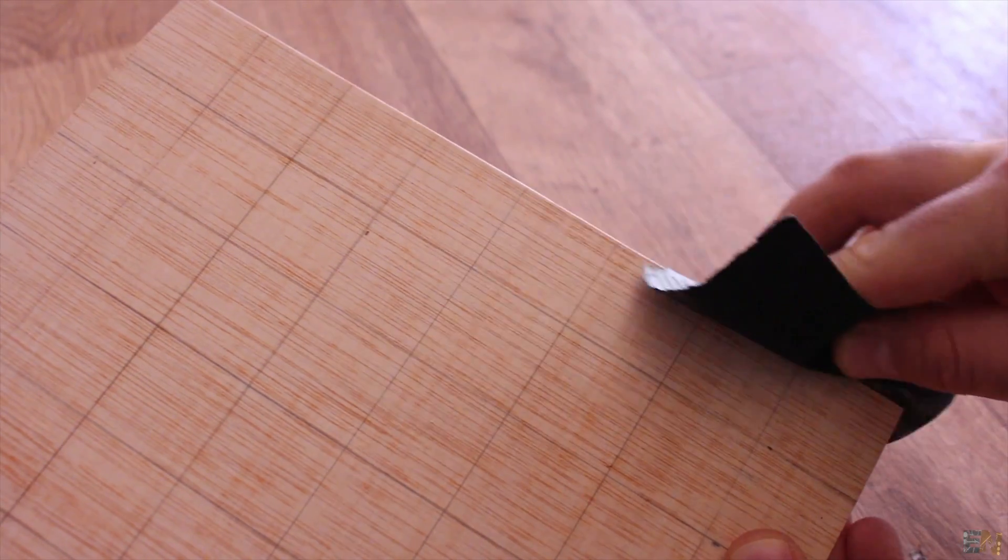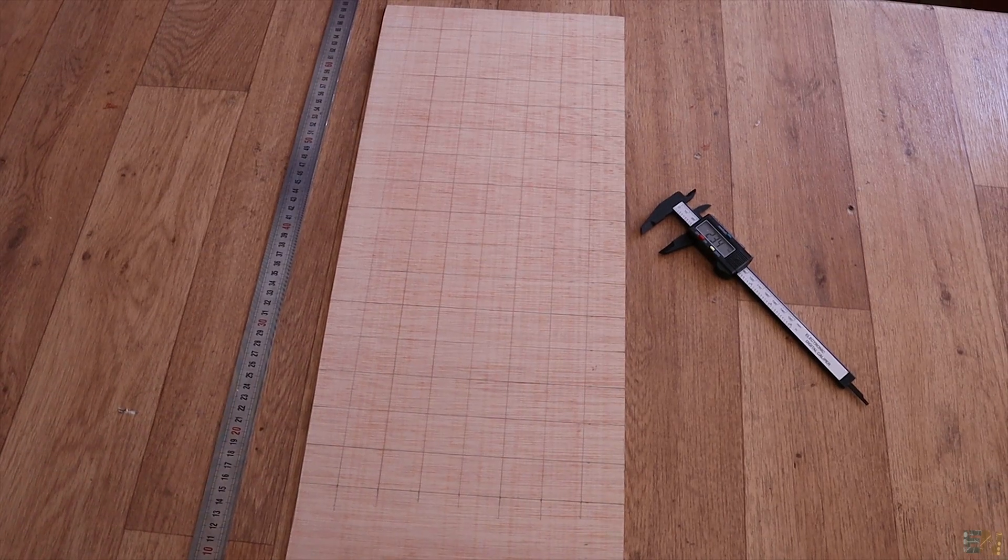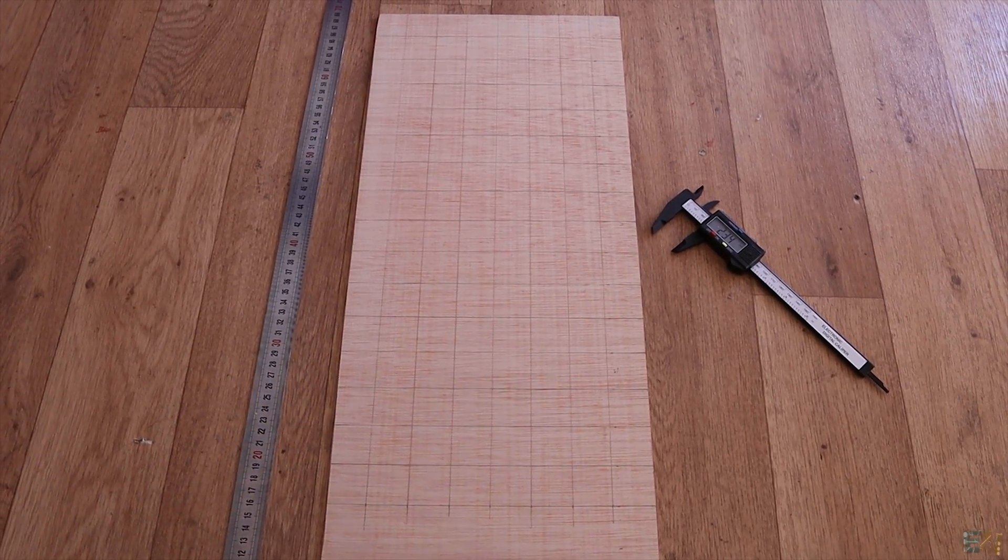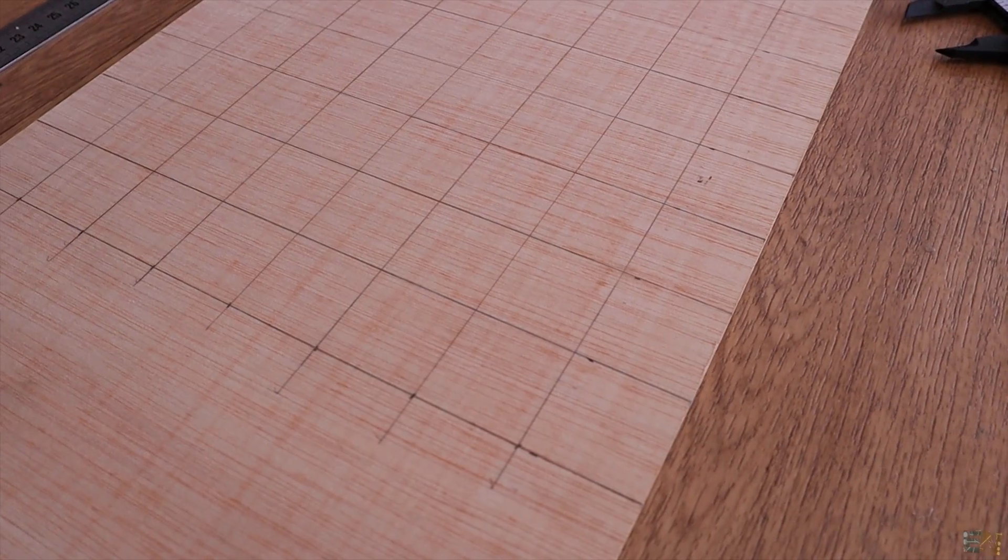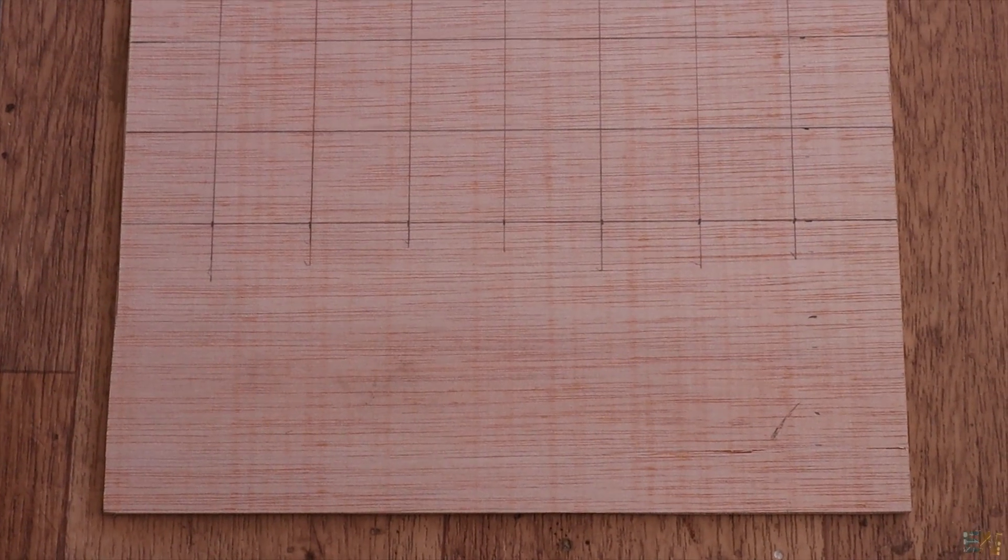So once I cut the part, I use sanding paper to smooth the edges. Pass the sanding paper all over the sides. So now we have the main plywood base. You can check the final dimensions of this board below this video.